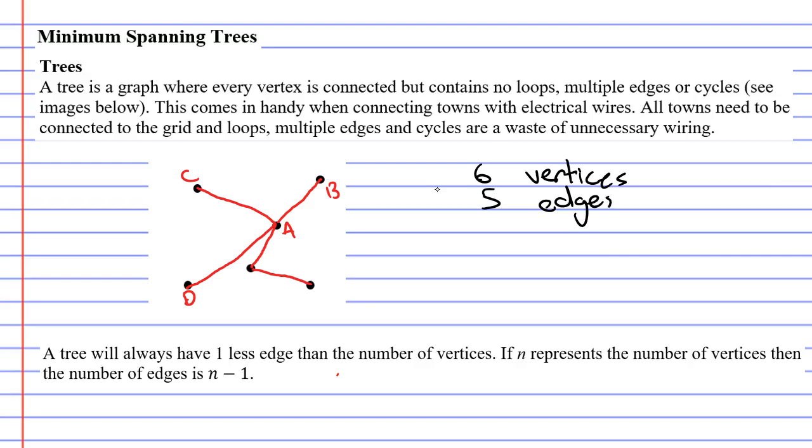And one thing you'll notice when you look at a tree is it will have one less edge than the number of vertices. One less edge than the number of vertices. Now if n represents the number of vertices then the number of edges is just n minus one.